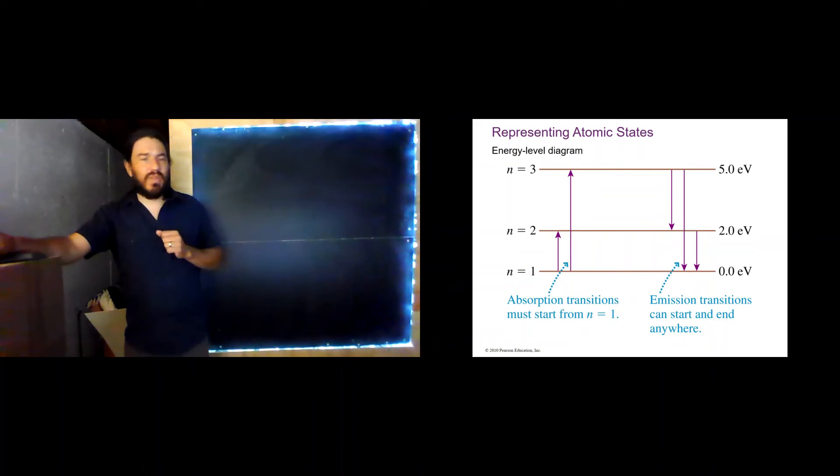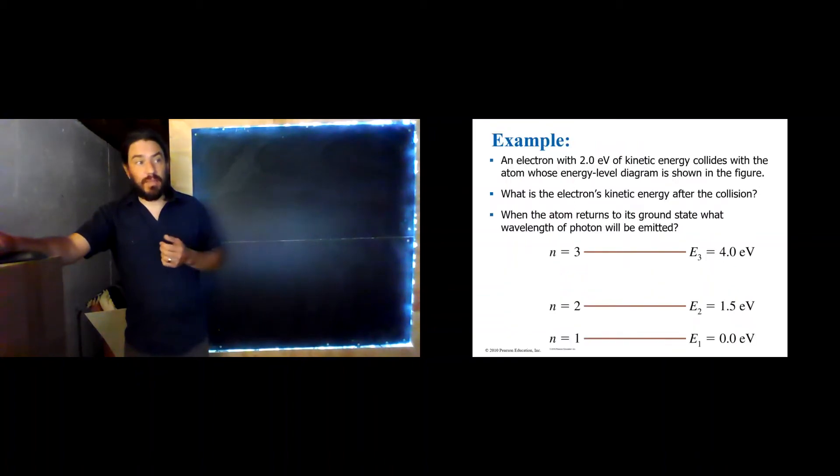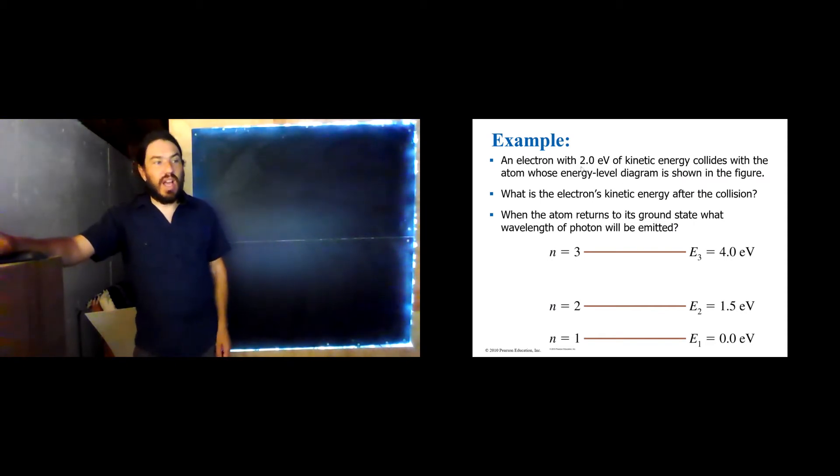Let's do a quick example. This will be very similar to an example that we might have done in the last chapter with a particle in a box. But let's say that we have an electron, and it collides with an atom. So we've got a 2 electron volt electron, and it collides with this atom that has the energy level diagram shown here.